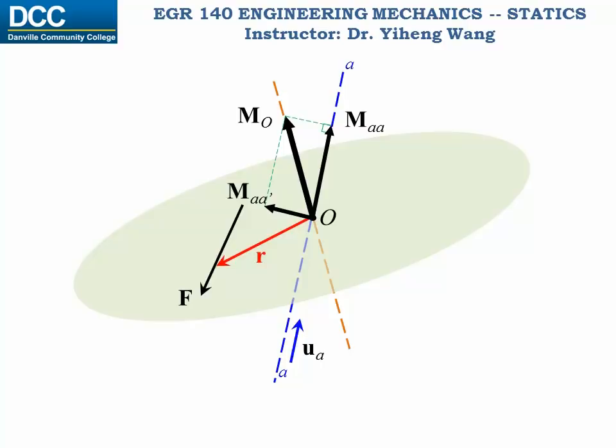Therefore, we can resolve it into one component MAA that is along the AA axis, and another component that is perpendicular to the AA axis. As you can probably tell, the MAA component is simply the projection of MO along the AA axis.